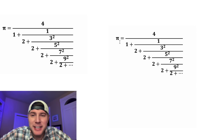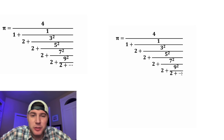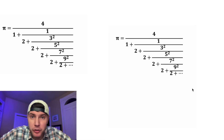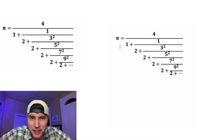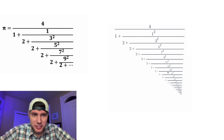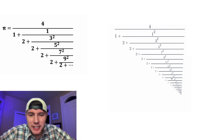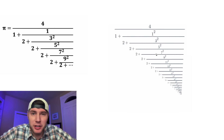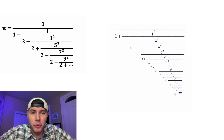Did you know that pi is exactly equal to this fraction? It's called a continuous fraction, and if you continue this pattern forever, it will give you exactly pi. Here's a longer version of it, and if you cut it in any one of these places, you'll get an approximation for pi. The further down you go, the more accurate your approximation.